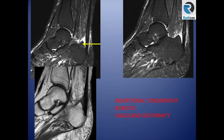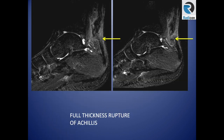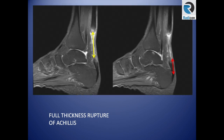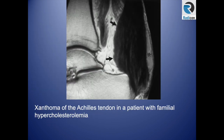Another case shows insertional tendinopathy with Haglund deformity and bursitis. In a full thickness tear — which can be insertional or non-insertional — you need to report: how far from the calcaneal attachment, the size of the gap between the proximal and distal stump, and the content of that gap. One case demonstrates a full thickness tear approximately three centimeters with a large gap between the stumps.